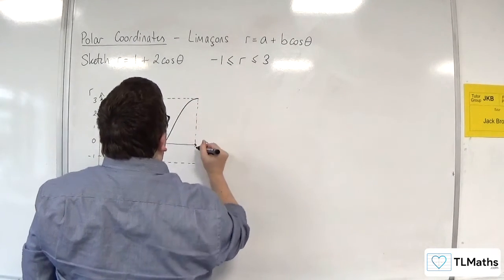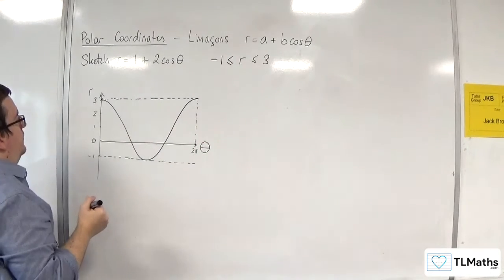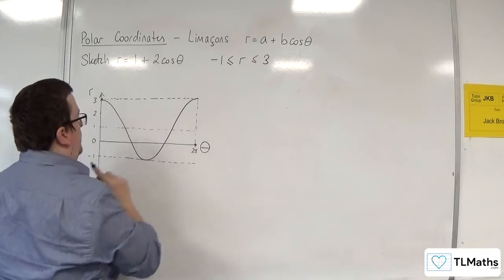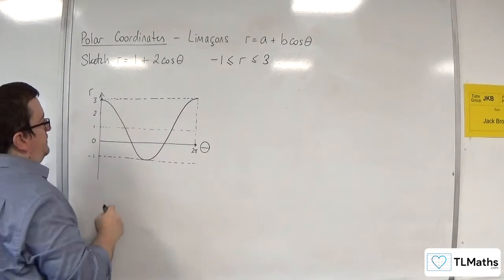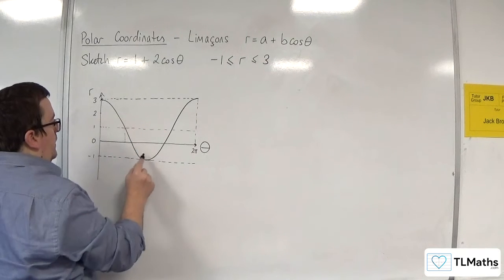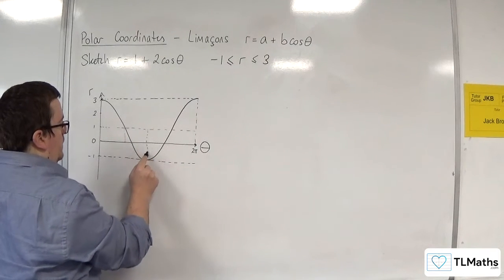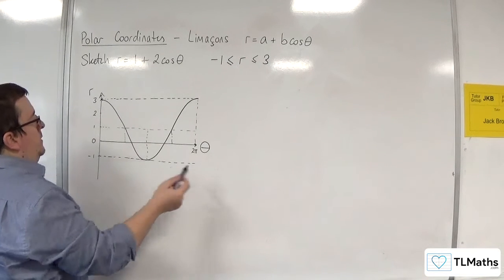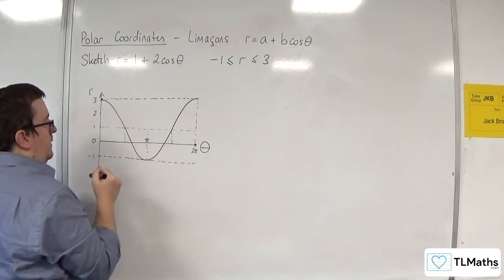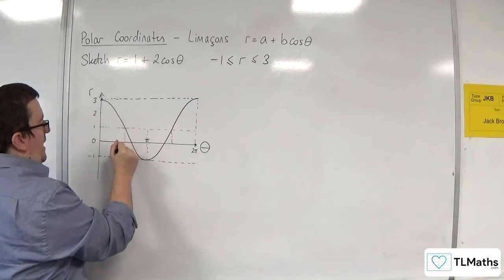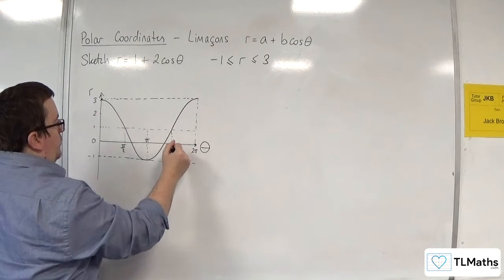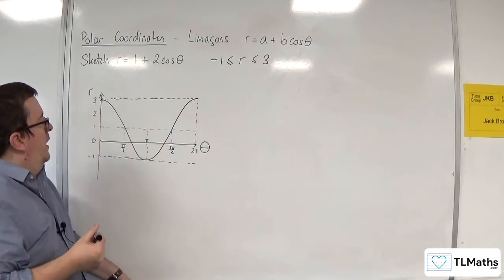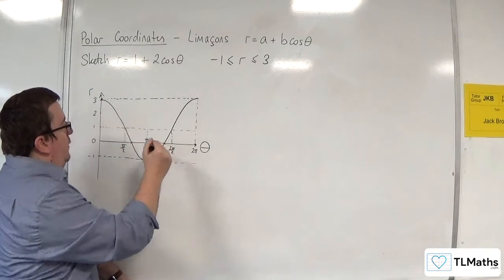So the curve is going to look something like that. Where this point here is going to be 2 pi. Its central values will be there. It's going through around 1. So that point there. So that point there. That point there. That point there. So this would be pi. This would be pi over 2. And this would be 3 pi over 2.